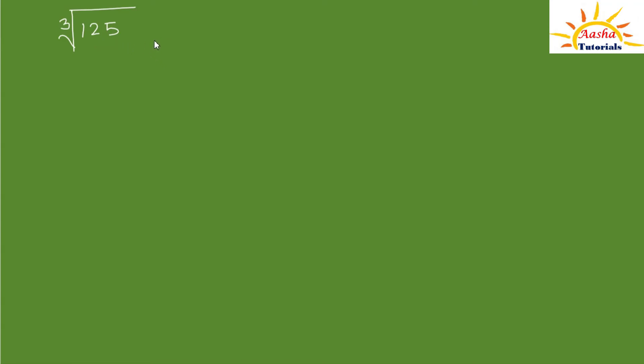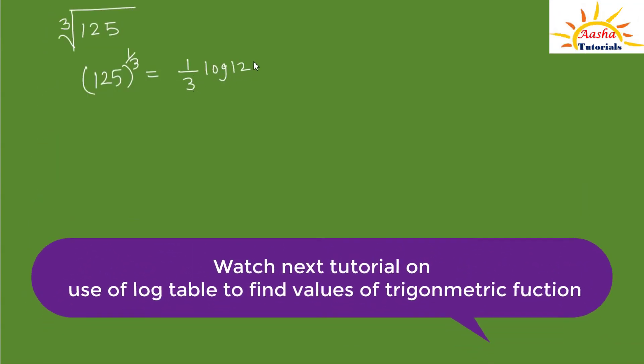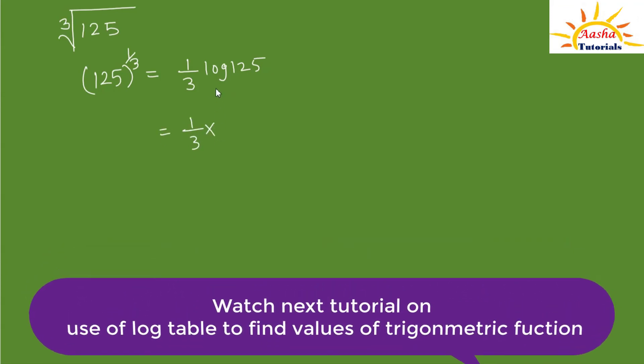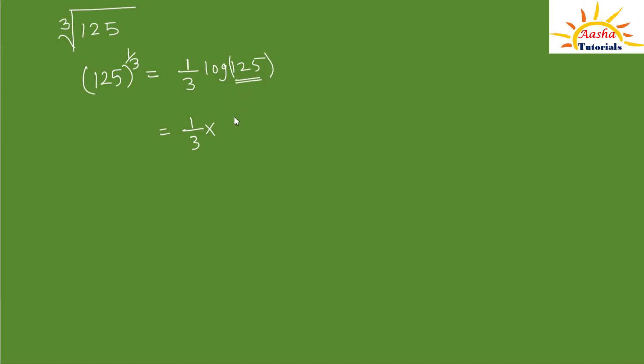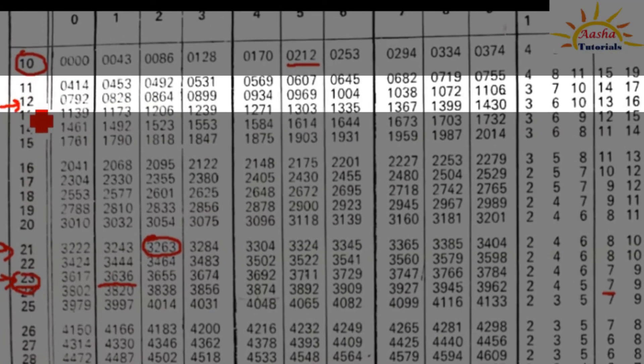Now, sometimes we are asked to find cube roots or 4th roots. Suppose we need the cube root of 125. We already know it is 5, but let's verify with the log table. Cube root of 125 means 125 raised to the power of 1/3. By the power rule, this is (1/3) × log of 125. Since 125 is a 3-digit number, the characteristic value is 2. Log of 12 in the 5th column is 0969.